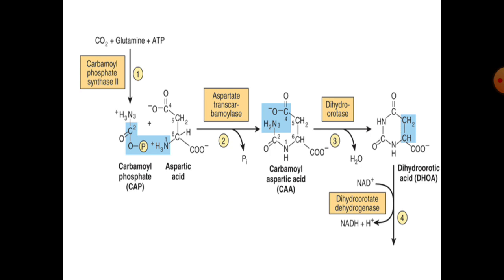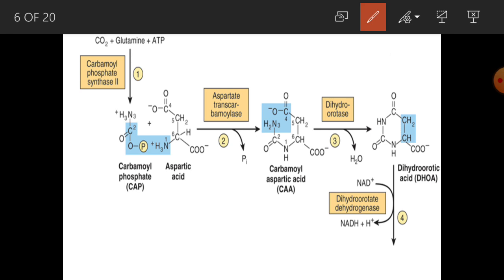We begin with carbon dioxide — shown as bicarbonate earlier — plus glutamine plus ATP (energy is required). The enzyme is carbamoyl phosphate synthase 2 (CPS2). You may recall from the urea cycle that its first step needs CPS1, so we get carbamoyl phosphate here via CPS2.